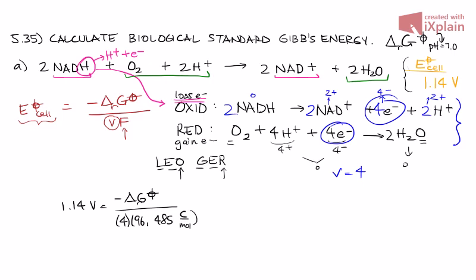We can make sure that the units cancel out by changing volts and coulombs into their basic SI units. So we get 1.14, and a volt is equal to kilograms meters squared per seconds cubed amperes. This equals negative delta RG over 4, 96,485, and a coulomb is ampere second per mole.